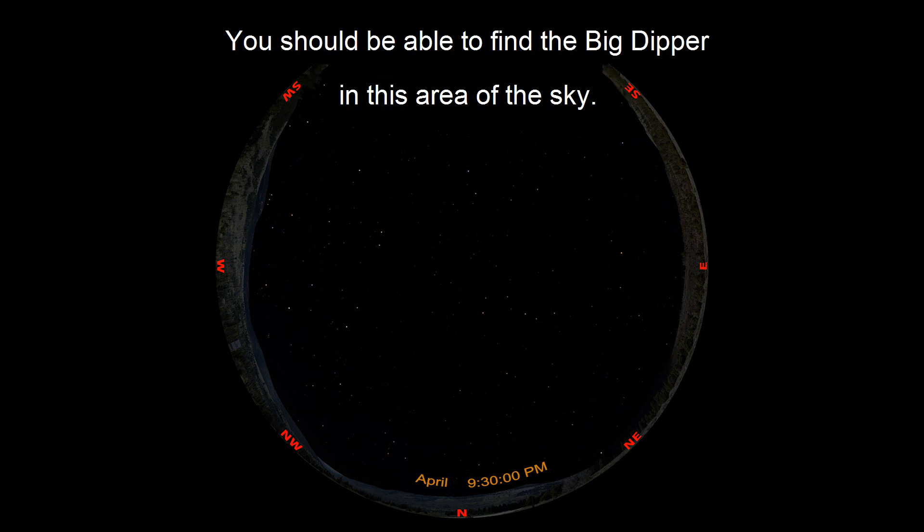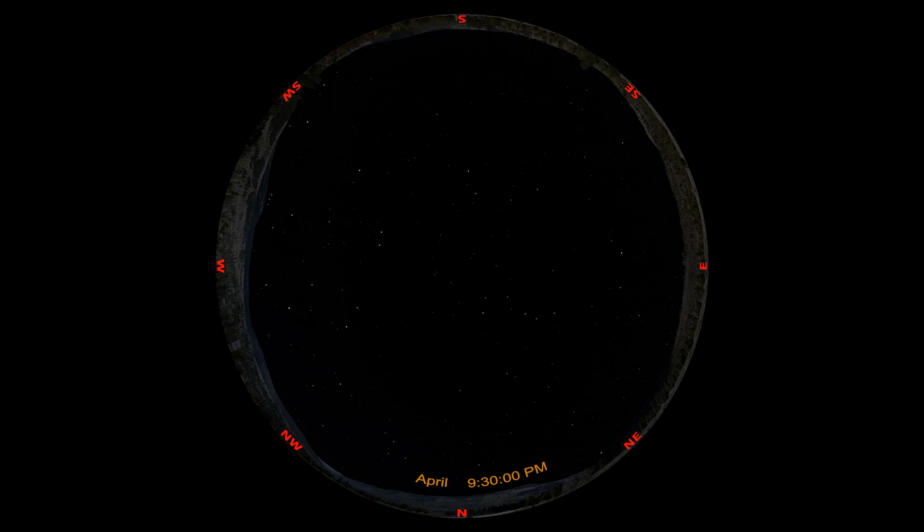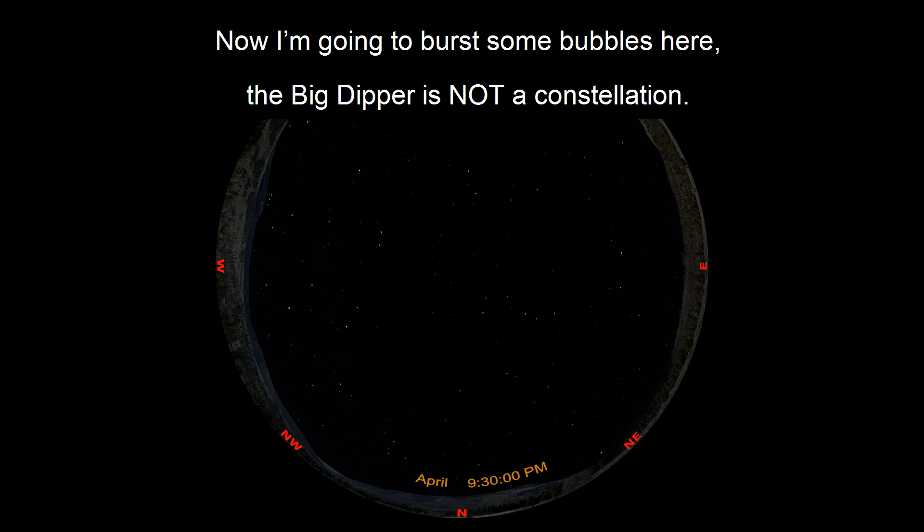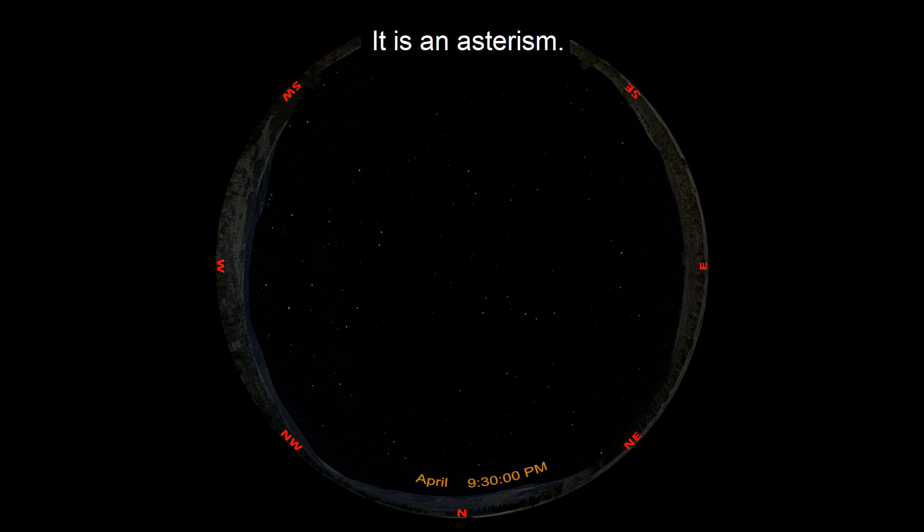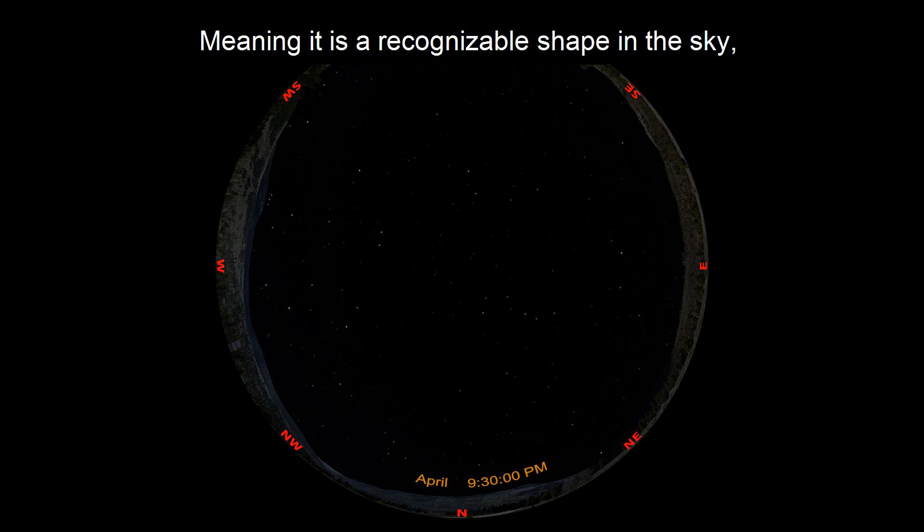You should be able to find the Big Dipper in this area of the sky. Now I'm going to burst some bubbles here. The Big Dipper is not a constellation. It is an asterism, meaning it is a recognizable shape in the sky, but it is not one of the official 88 constellations.